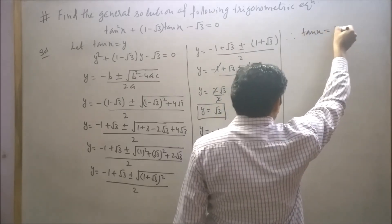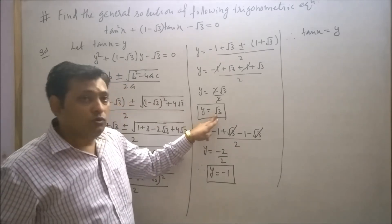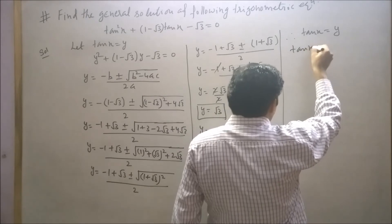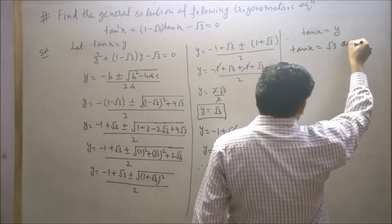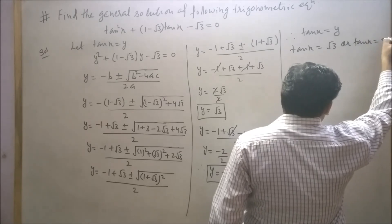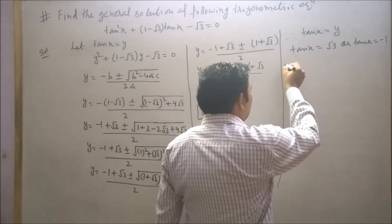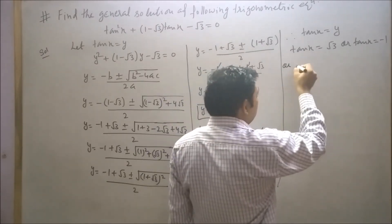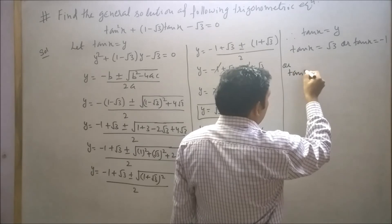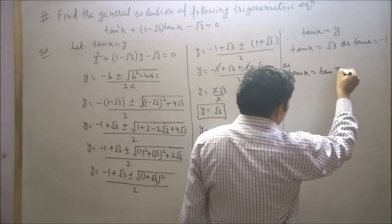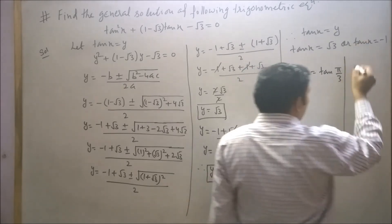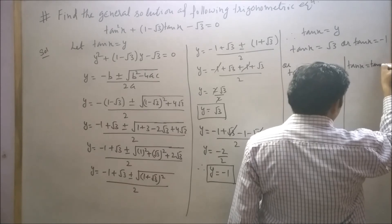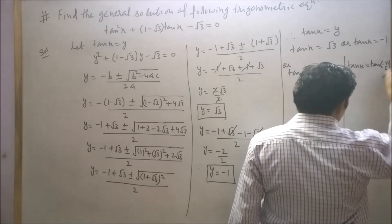Therefore, since tan(x) = y, we have tan(x) = √3 or tan(x) = −1. We can write tan(x) = tan(π/3) or tan(x) = tan(−π/4).